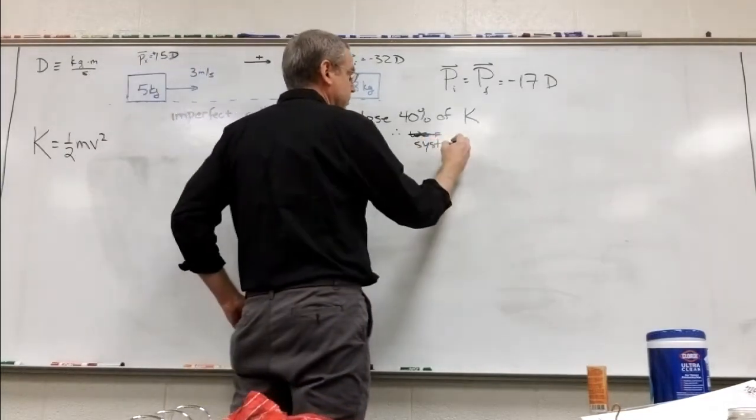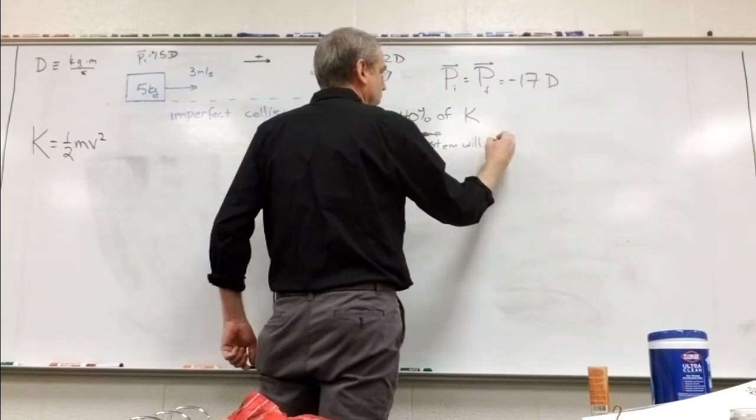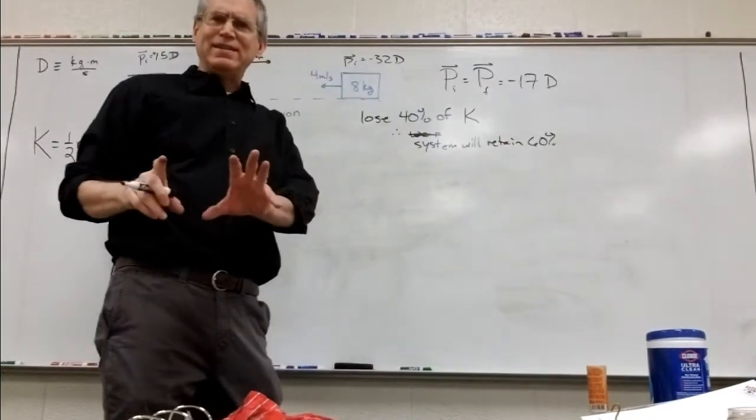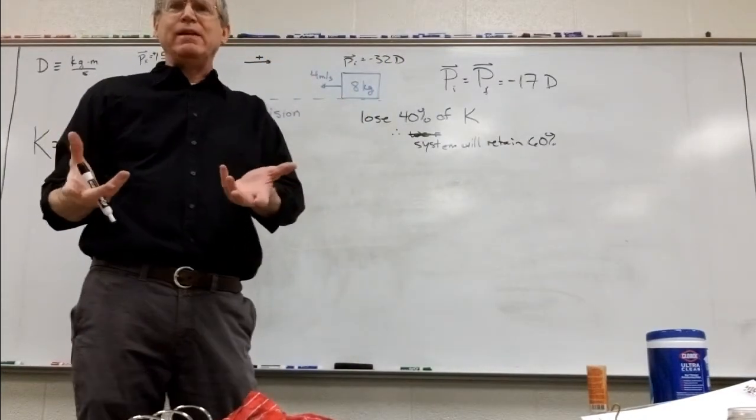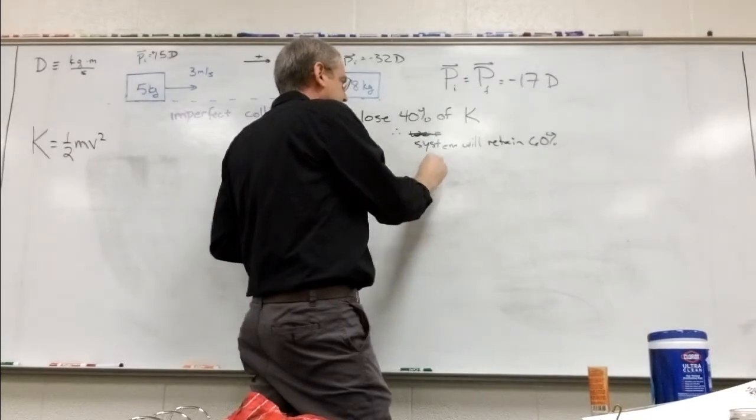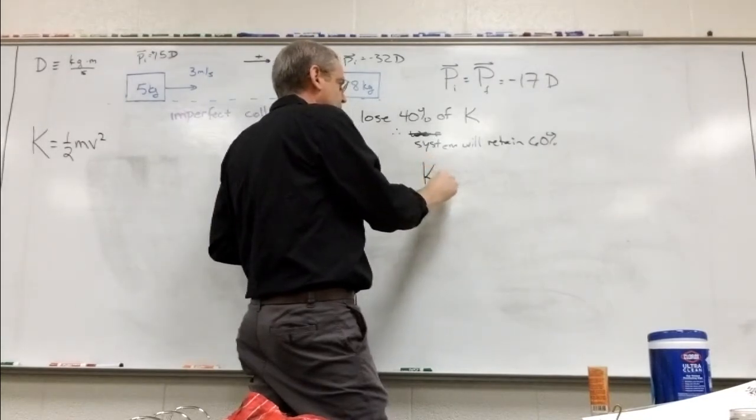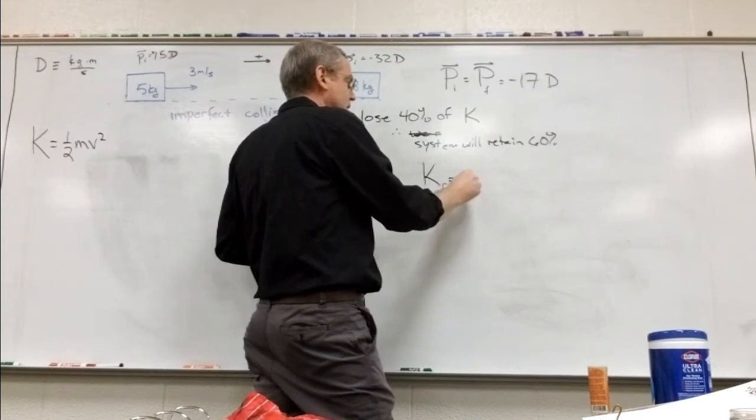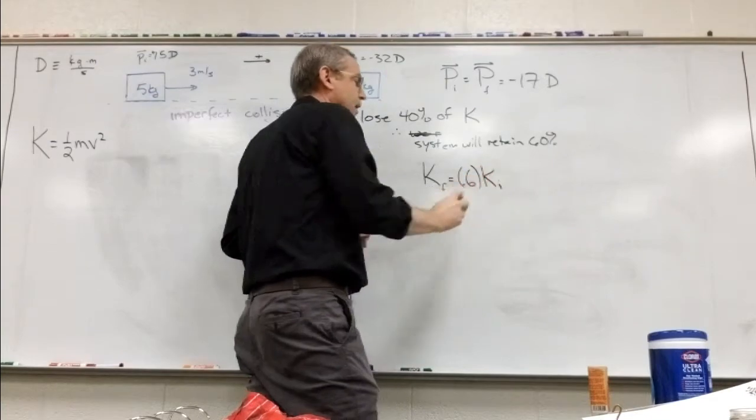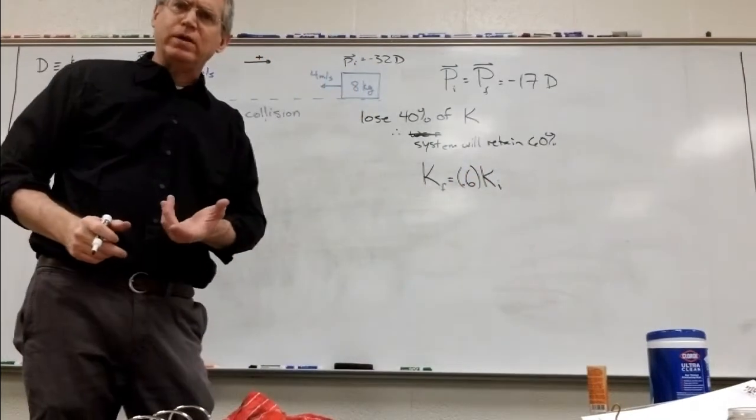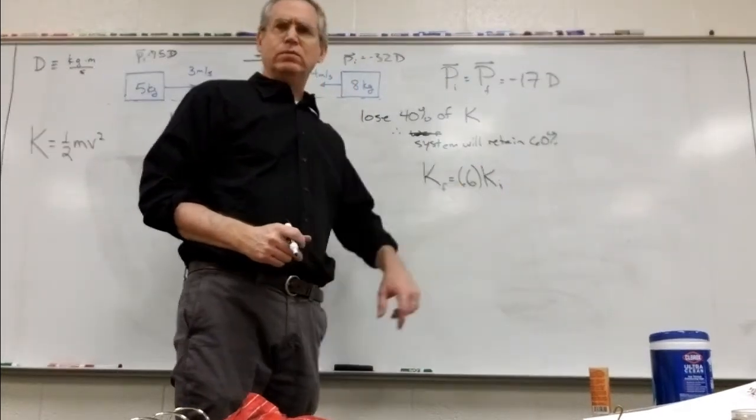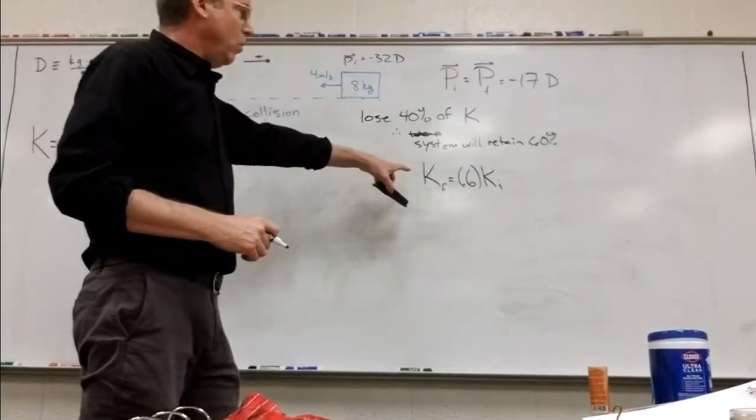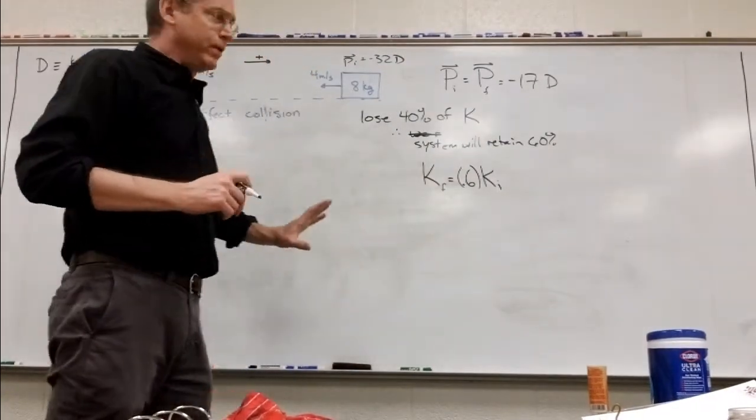The system will retain 60%. To write this in math speak, because ultimately we need formulas here in order to solve it, we have kinetic final is equal to 60%, or 0.6, times my initial kinetic. And that's going to be the basis for one of our equations. So kinetic final is equal to 0.6 times the initial kinetic. So now let's actually go into setting up the equations. I'm going to hold that right there. I'm going to erase it before we're done, but I'm going to hold it there for right now.